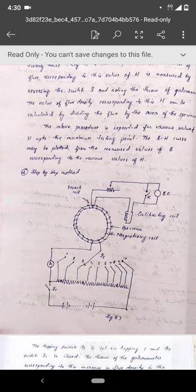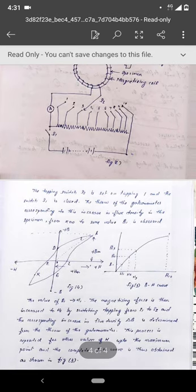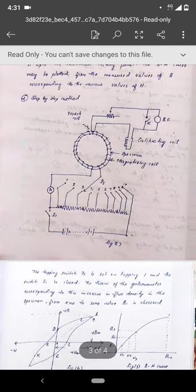In the step-by-step method, the ring specimen, search coil, and ballistic galvanometer circuit remain the same. The only difference is that instead of a rheostat, you use a potential divider circuit with tappings numbered 1 to 10 in the magnetizing winding circuit. The tappings can be changed from 1 to 10 and also from 10 to 1 in reverse order. This corresponds to different values of H and B, and this second circuit is also commonly used to plot the hysteresis loop.